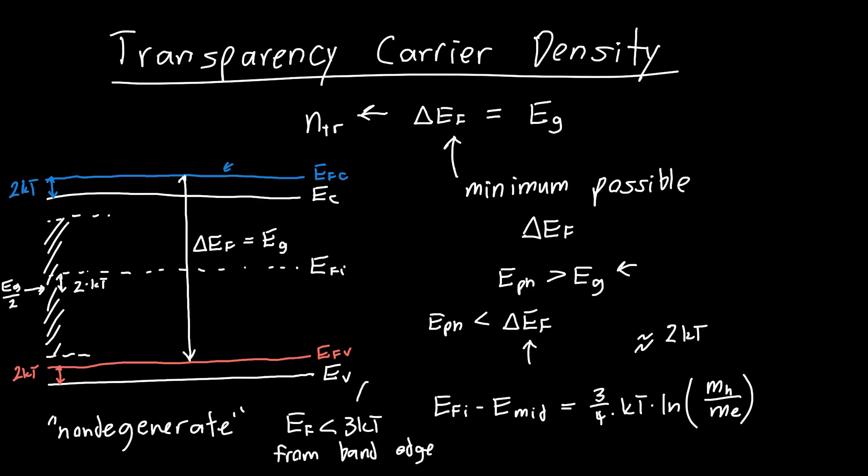We are badly violating this assumption with the conduction band. Not so badly with the valence band, so we can probably get away with it. We're just probably going to incur some error. But we're badly violating the assumption of non-degeneracy in the conduction band. So we need to figure out how to calculate the total number of electrons in a different way, not using the Boltzmann approximation.